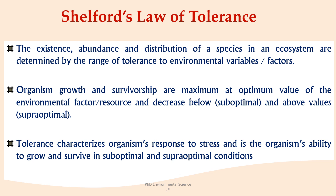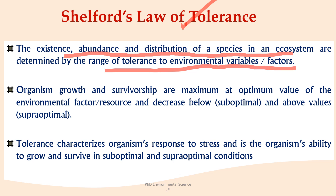Shelford's law of tolerance is a principle in ecology that explains how the existence, abundance, and distribution of species within an ecosystem are influenced by their tolerance to various environmental factors. Every species has a range of tolerance for environmental variables such as temperature, moisture, pH, and nutrient levels. This range defines the conditions under which a species can survive and thrive.